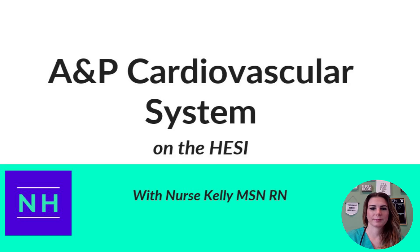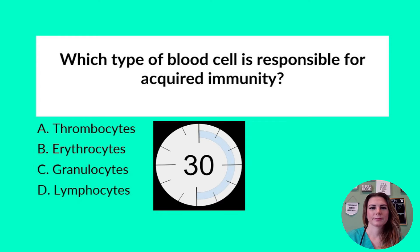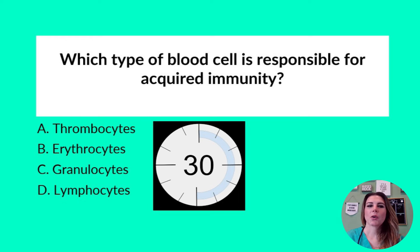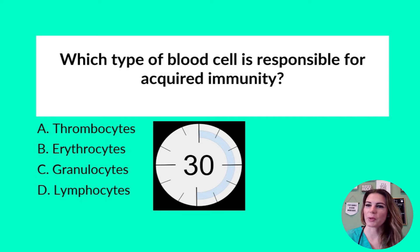Let's get started. Question of the Day: Which type of blood cell is responsible for acquired immunity? Is it A, thrombocytes; B, erythrocytes; C, granulocytes; or D, lymphocytes? Please pause here so that you have time to try and answer the question yourself. We will go through this together in just a bit. Good luck, you've got this.